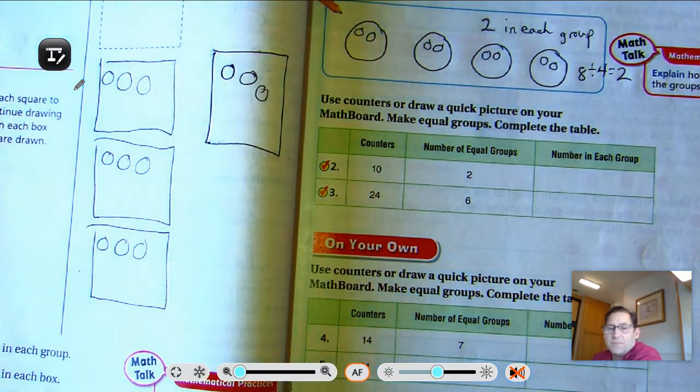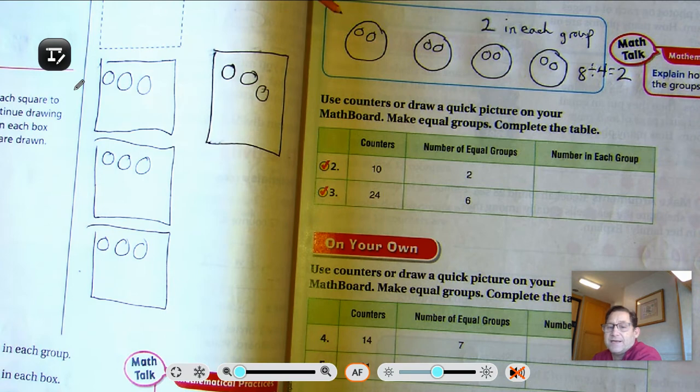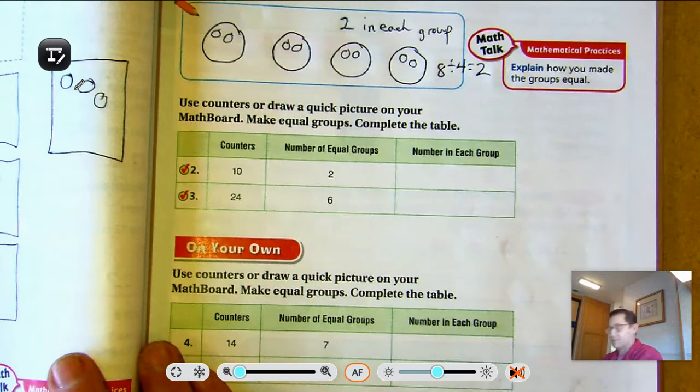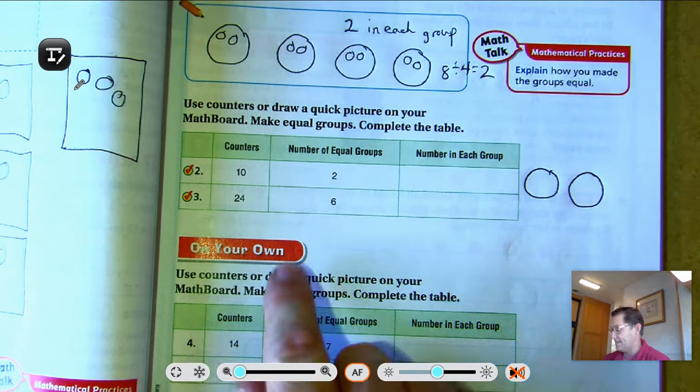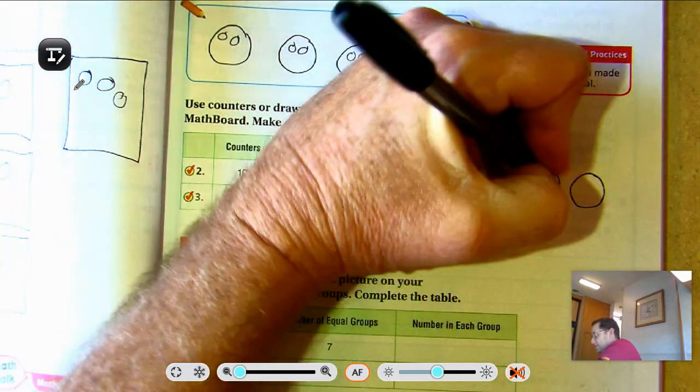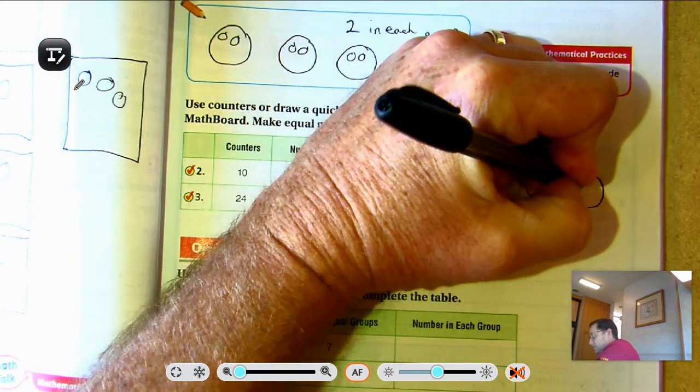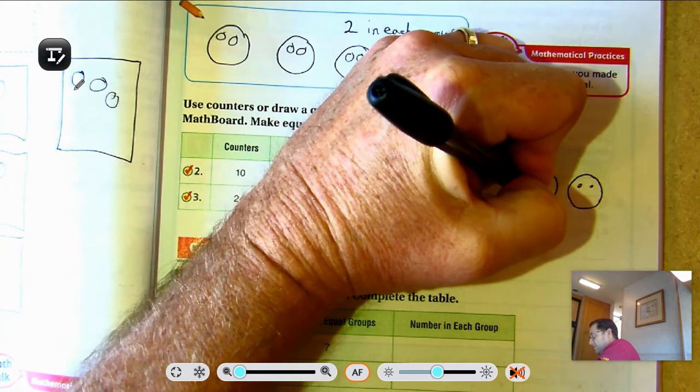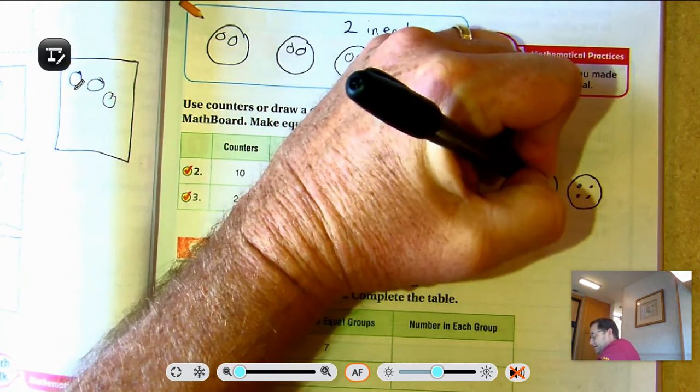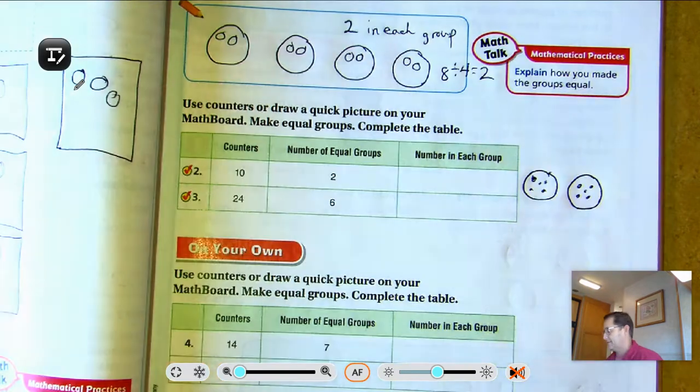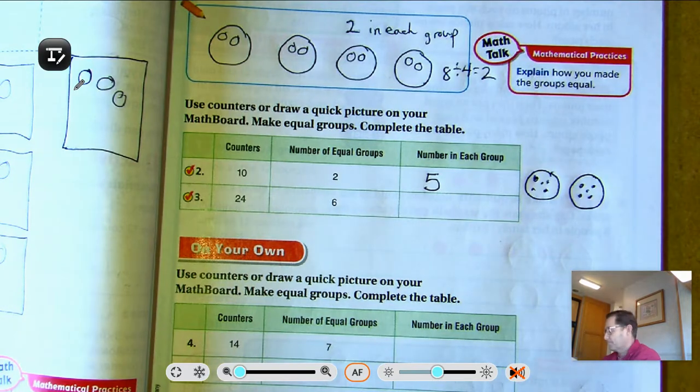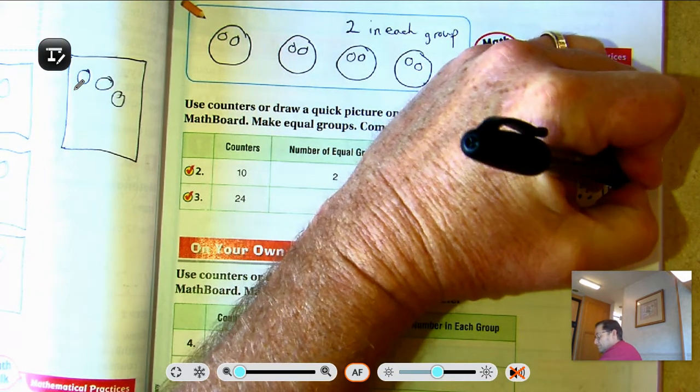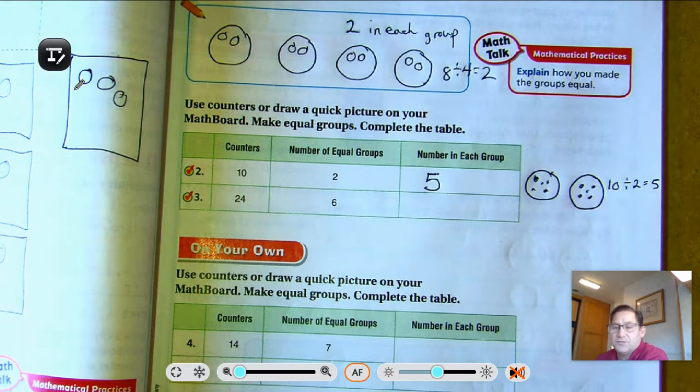Our division problem would look like 8 divided by 4 equals 2. Use counters or draw a quick picture on your math board. Make equal groups and complete the table. I have 10 counters, and I'm going to make 2 equal groups. So there's my 2 equal groups. And I need to share 10 counters: 1, 2, 3, 4, 5, 6, 7, 8, 9, 10. So I put 5 in each group. 10 divided by 2 is 5.